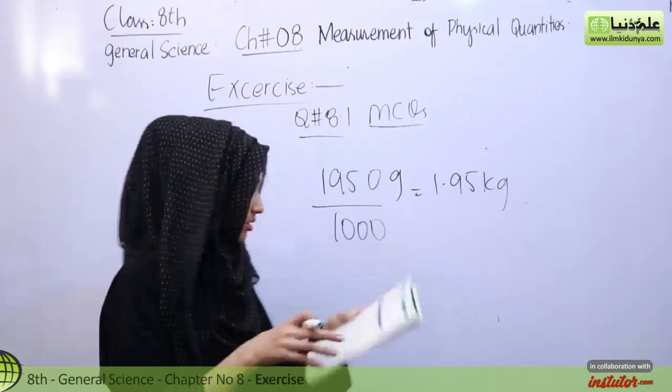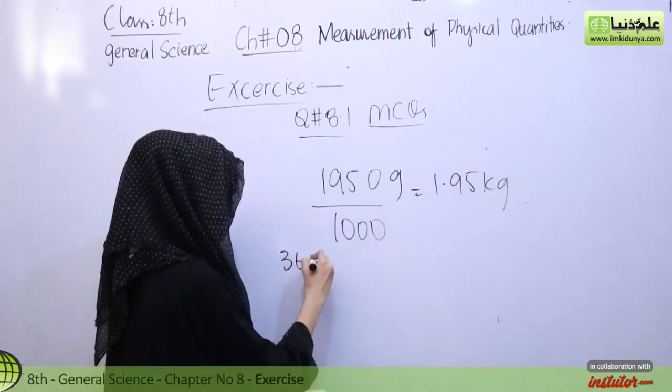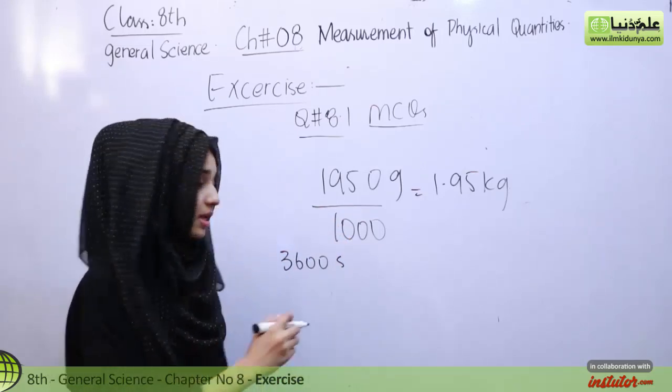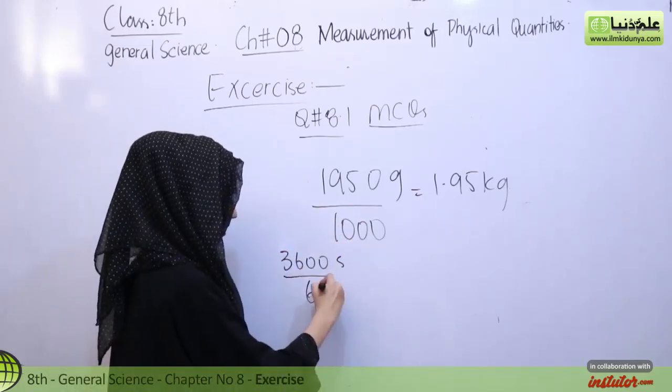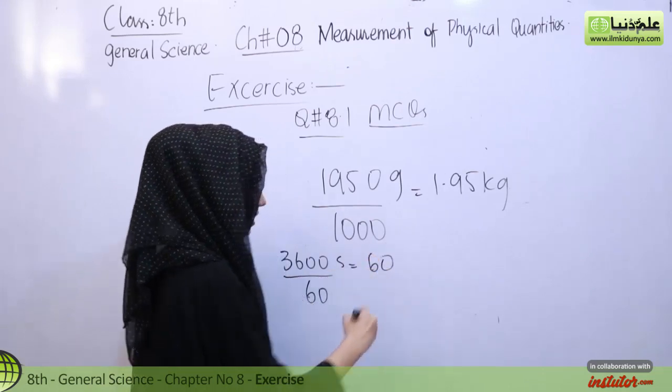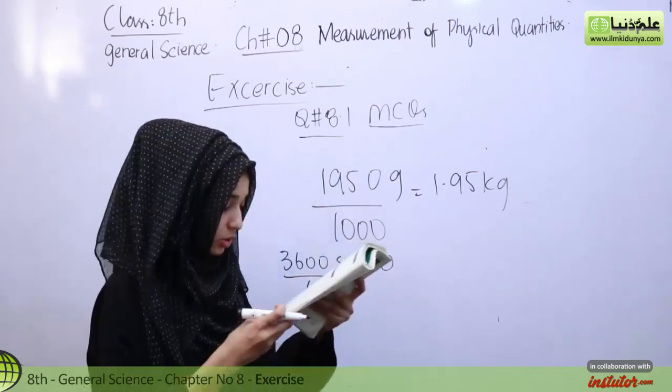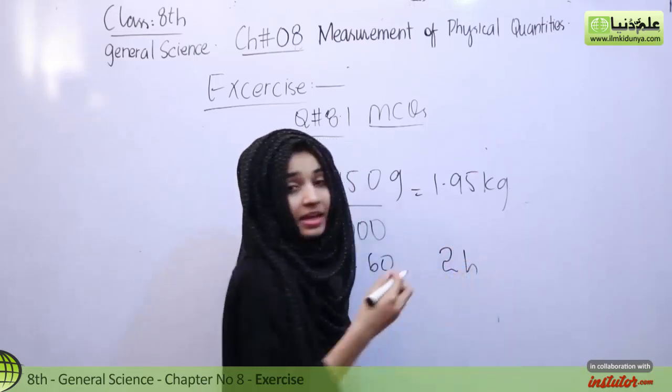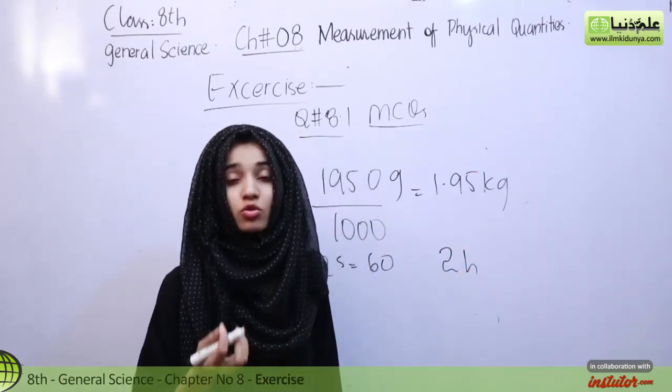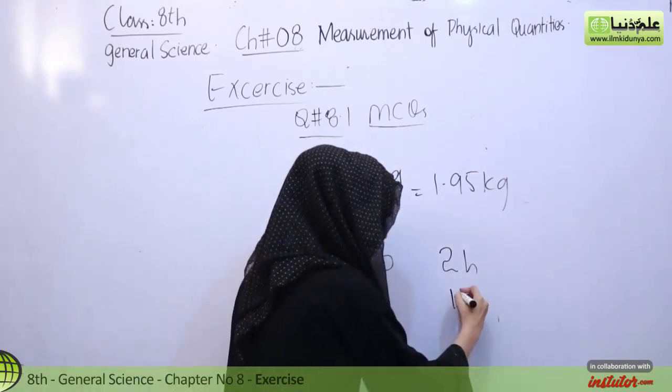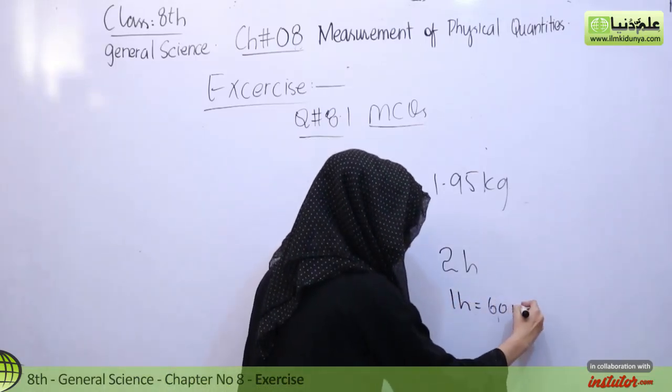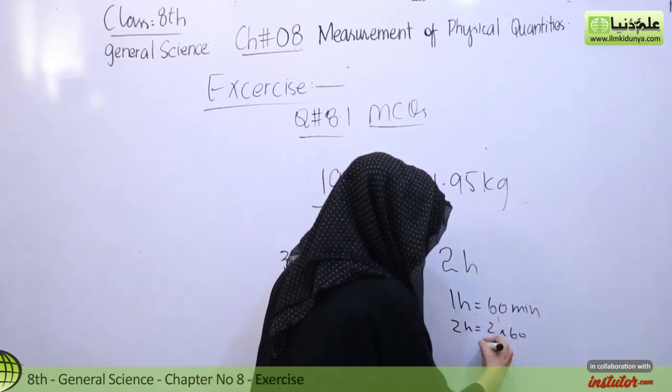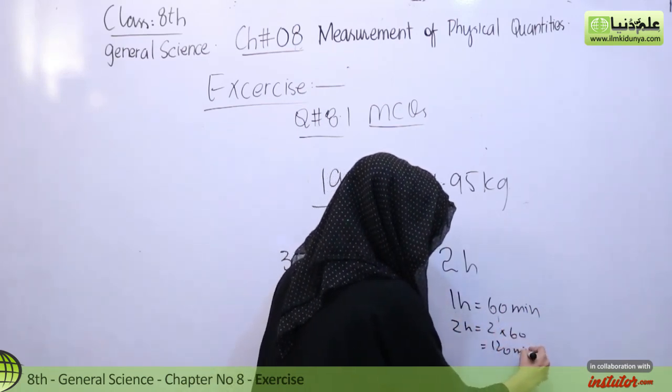Convert in minutes. 3600 seconds ko minutes me convert karna hai. Second ko minute me convert karne ke liye hum isko 60 se divide karenge, so the answer is 60. Two hours ko hum minutes me convert karna hai. One hour is equal to 60 minutes, two hours is equal to 120 minutes. Simple.